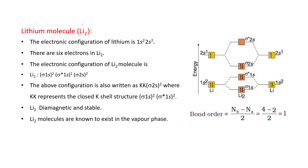For the lithium molecule Li₂: the electronic configuration of a lithium atom is 1s², 2s¹. In Li₂, two lithium atoms combine giving 6 total electrons. The electronic configuration of Li₂ is sigma 1s², sigma star 1s², sigma 2s². This is also shown in the energy level diagram.